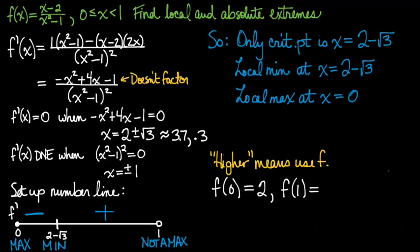Higher means use f, not f prime. f of 0 is equal to 2, but f of 1 does not exist. You divide by 0, and I'll be honest, I was not expecting that.